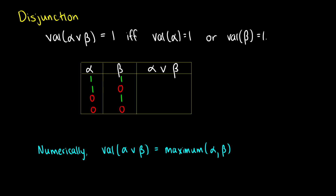The disjunction — this is our word 'or.' We say the value of alpha-or-beta is 1 if and only if alpha is 1 or beta is 1. So at least one of these two has to be true, and both can be true. In the first row, alpha is 1 and beta is 1 — at least one is true, so alpha-or-beta is true. In the second row, alpha is true but beta is false — at least one is true, so it's true. In the third row, alpha is false but beta is true — at least one is true, so it's true. But in the last row, alpha is false and beta is false — neither is true, so alpha-or-beta is false. This is a 1, 1, 1, 0 truth table.